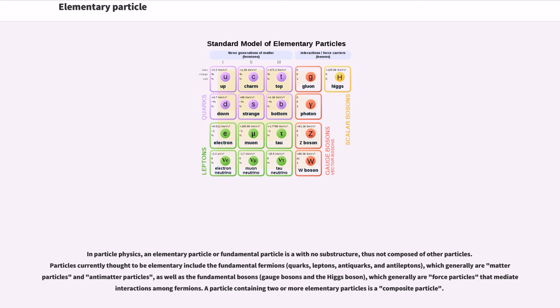Elementary particle. In particle physics, an elementary particle or fundamental particle is a particle with no substructure, thus not composed of other particles. Particles currently thought to be elementary include the fundamental fermions: quarks, leptons, antiquarks, and antileptons, which generally are matter particles and antimatter particles.